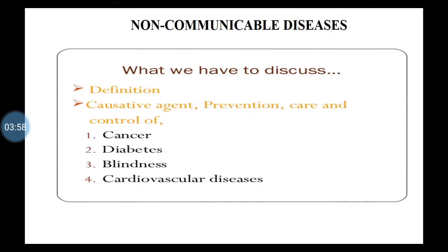The four diseases in your syllabus are cancer, diabetes, blindness, and cardiovascular diseases. For each individual disease, we must know the risk factors — also called causative agents, predisposing factors, or simply factors — then symptoms, types if any, and prevention, care and control. Questions may be asked by the name factors, risk factors, or predisposing factors — all refer to the causes.